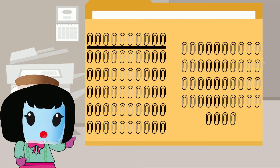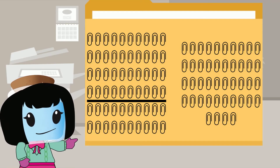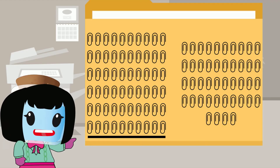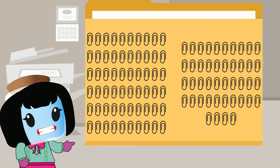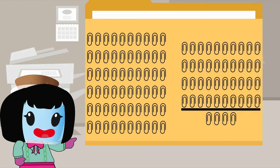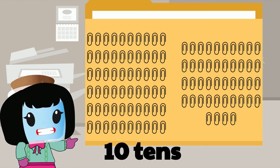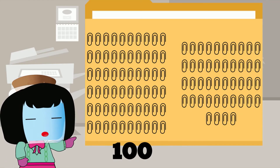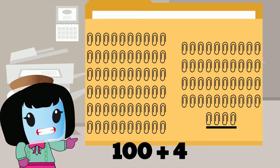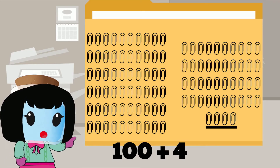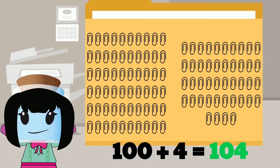Two, three, four, five, six, seven, eight, nine, ten — ten tens is equal to 100. Since there are four paperclips on the last line, we have a total of 104 paperclips.